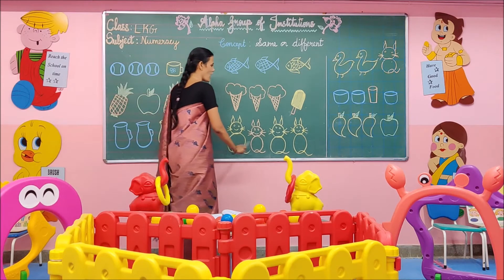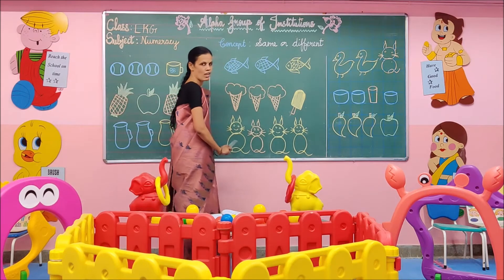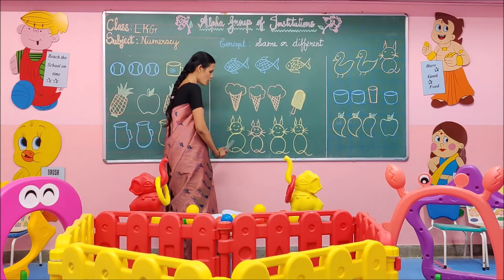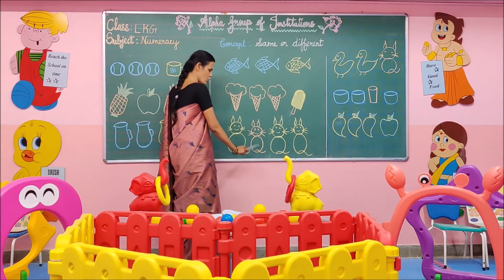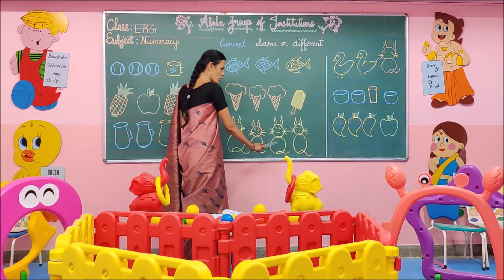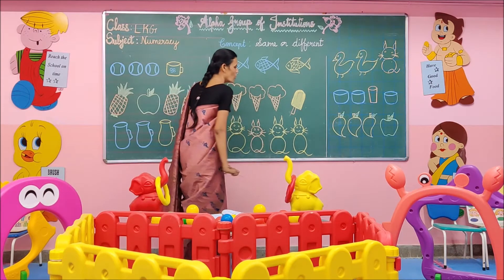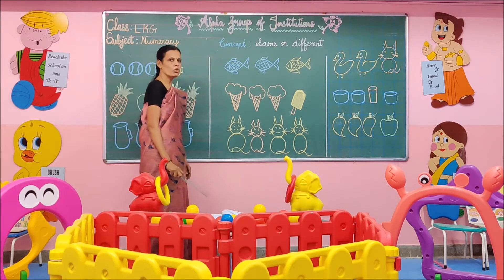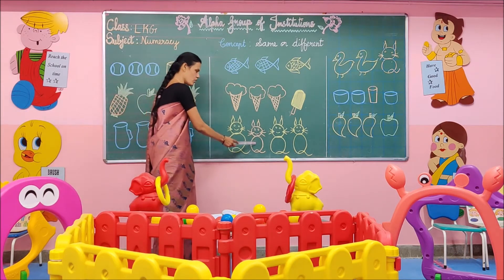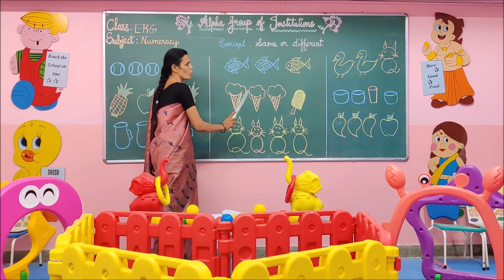Next, here we have cats. This is yellow in colour. This is brown. This is yellow. This is yellow. Which one is different in this group? Brown cat is different. Brown cat does not belong to this group.